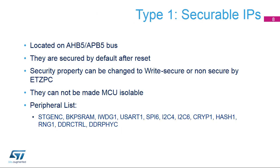Type 1 securable IPs are located on the AHB-5 and APB-5 bus. They are secured by default after reset. The security properties can be changed to write secure or non-secure by ETZPC. They cannot be made MCU isolable.